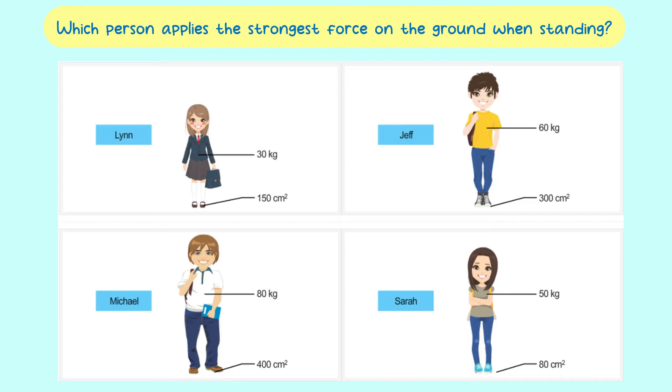That means you have to convert the mass into Newton. You will also need to convert the surface area. The surface area must be in meter square. So, how to convert a centimeter square to meter square? You can divide with 10,000.